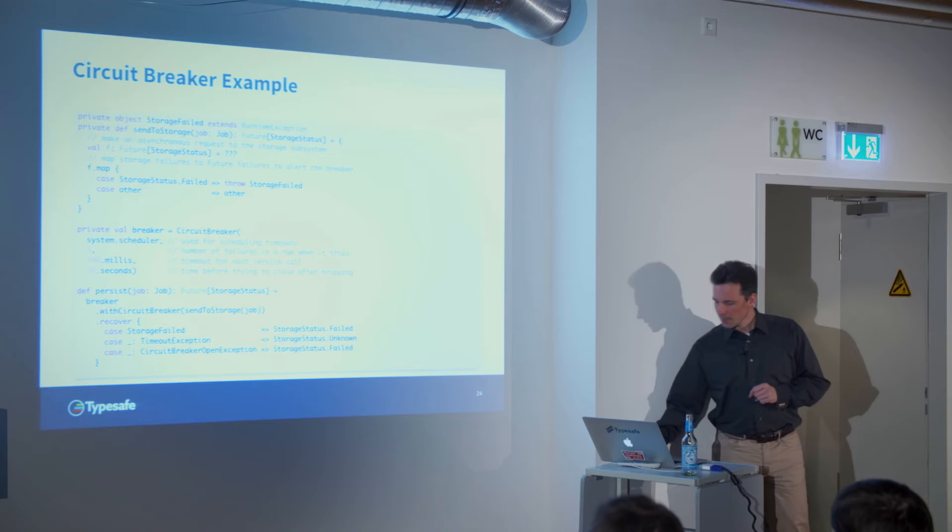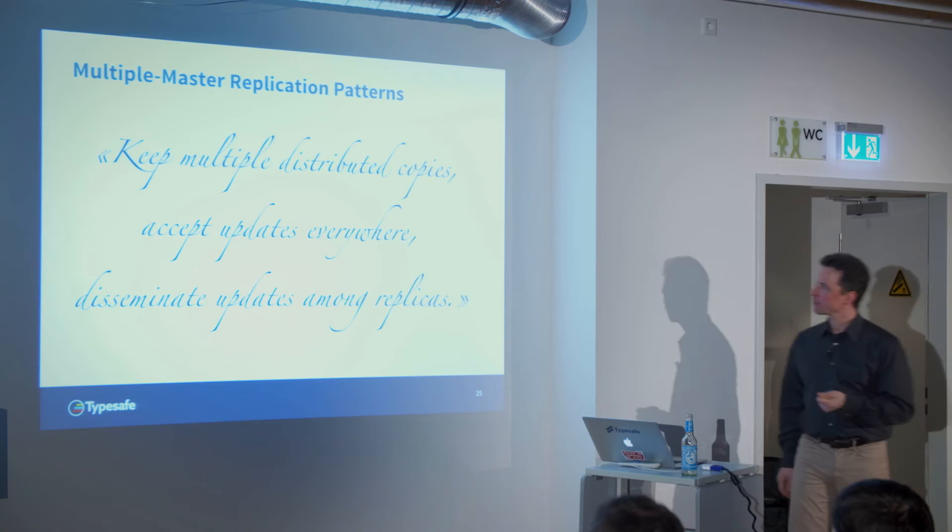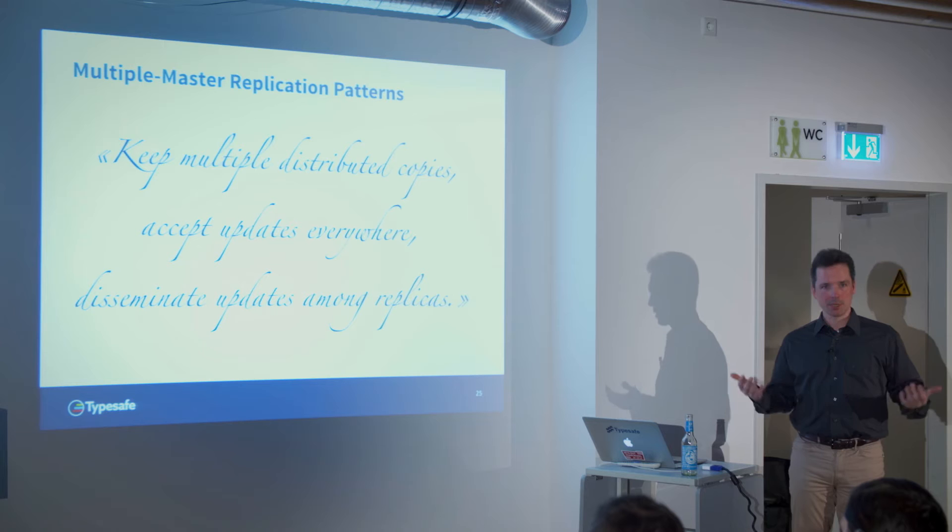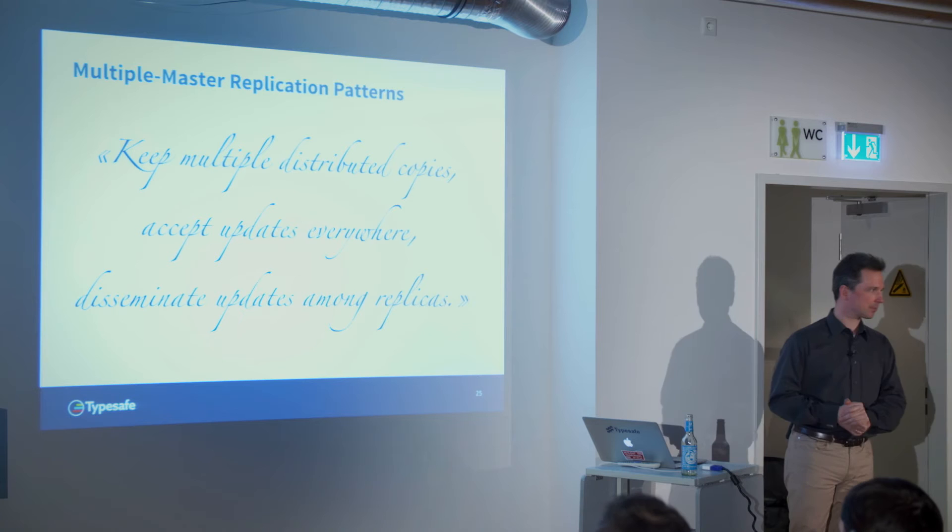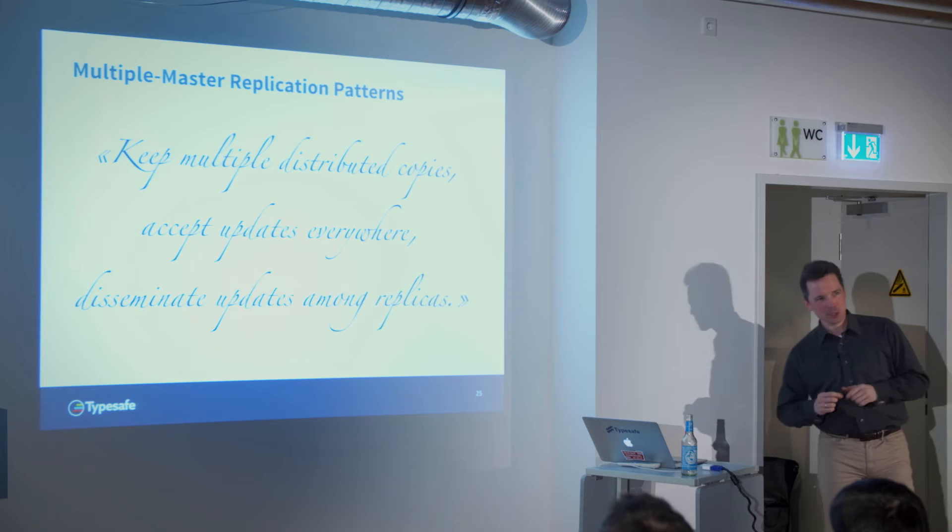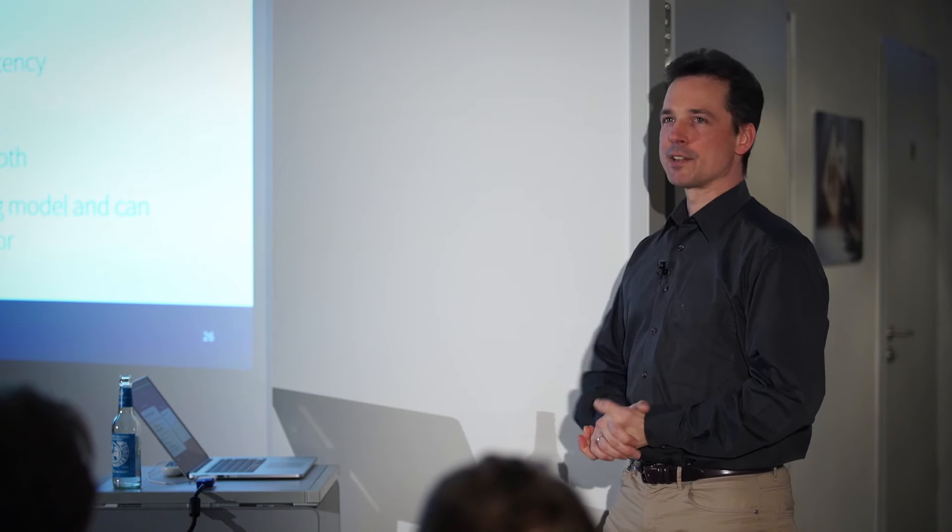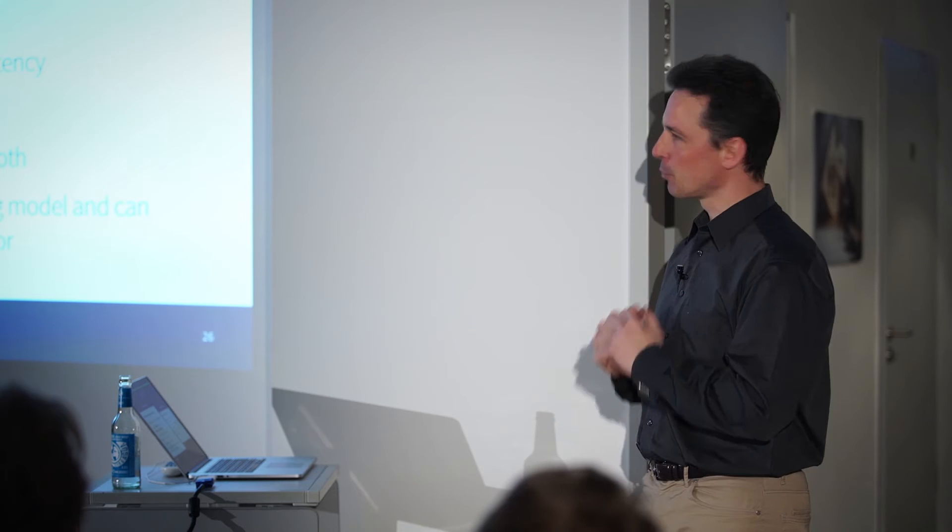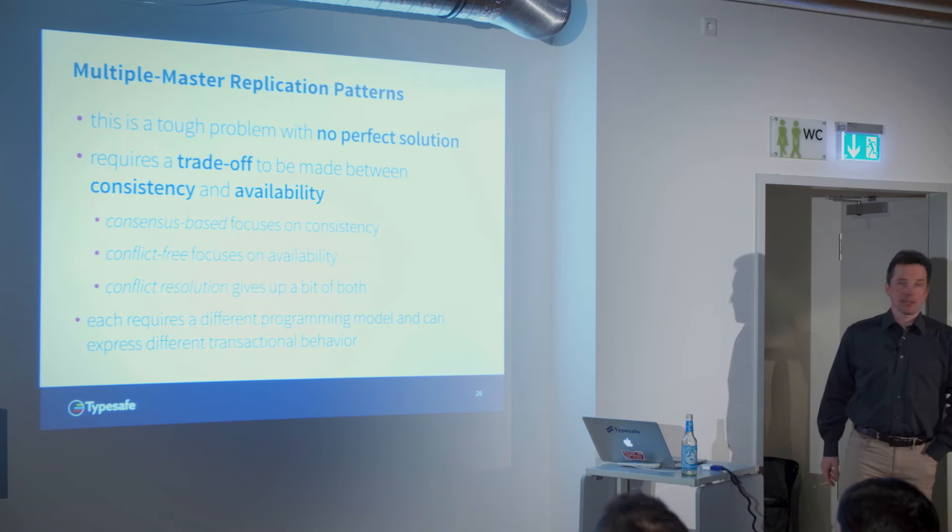Then I have a rather different topic, but one that is interesting. Multiple master replication patterns. So I told you you need to be able to distribute your application, your state. What does that mean? Keep multiple distributed copies, accept updates everywhere, disseminate updates among replicas. That's extremely general. It describes not a solution, but more like a problem space. This is why this is slightly different. It's basically an unsolved problem. Or there are multiple solutions, none of which are perfect. It's a tough problem, and it always requires trade-offs. And now we'll talk about the different choices here a bit. If anything is unclear, ask.